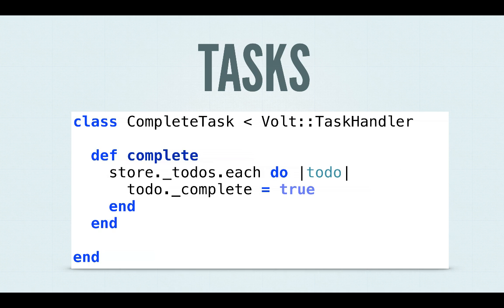In Volt, you typically work with your models directly on the client side, but sometimes you need to run code on the server without loading a bunch of data up on the client side. For that, Volt provides what are called tasks. Tasks are a class that you can create, and on the client side, when you call the methods on that class, it'll return a promise, then it will go to the server and run the code, and then return the value to the promise or fail the promise with an exception.